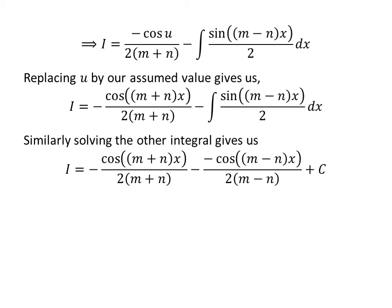Similarly, we can solve the integral of sine of m minus n times x upon 2 with respect to x, just as we solved the first integral. So we get I is equal to minus cosine of m plus n times x upon 2 times m plus n, minus minus cosine of m minus n times x upon 2 times m minus n, plus capital C.